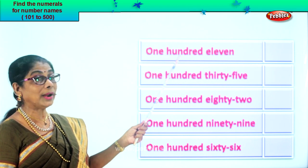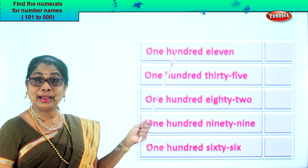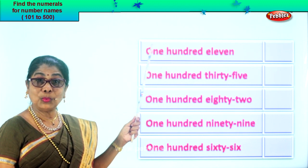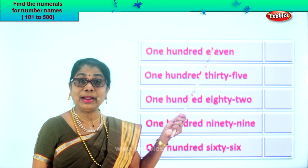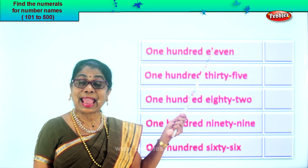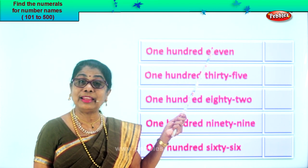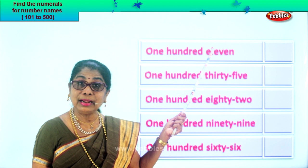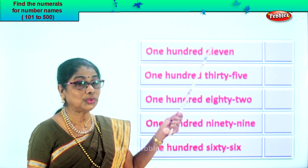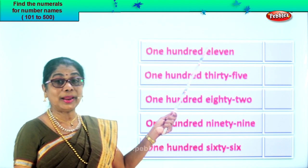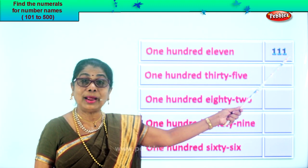If it is one hundred, how will you write? One, zero, zero. Isn't it? One hundred. But we have here one hundred eleven. So how will you write one hundred and eleven? In the ones place you have one, tens place one, hundred place one. That is how we get it — one, one, one.